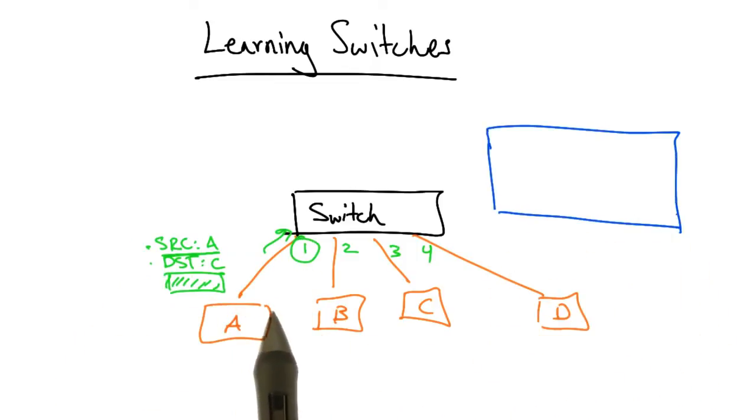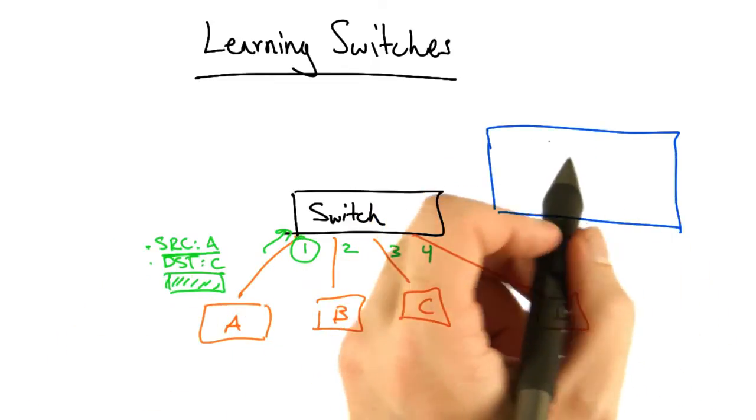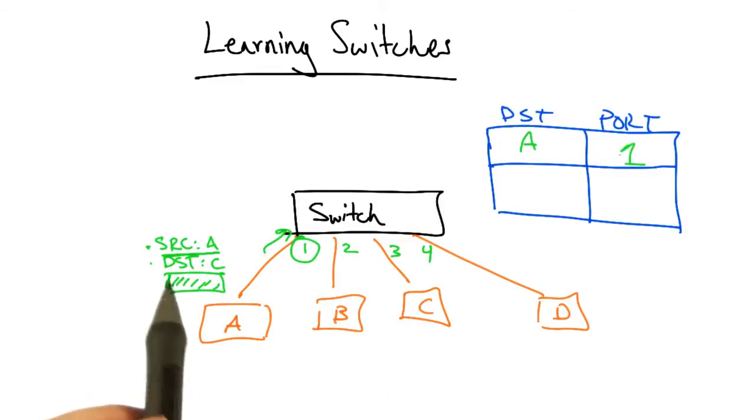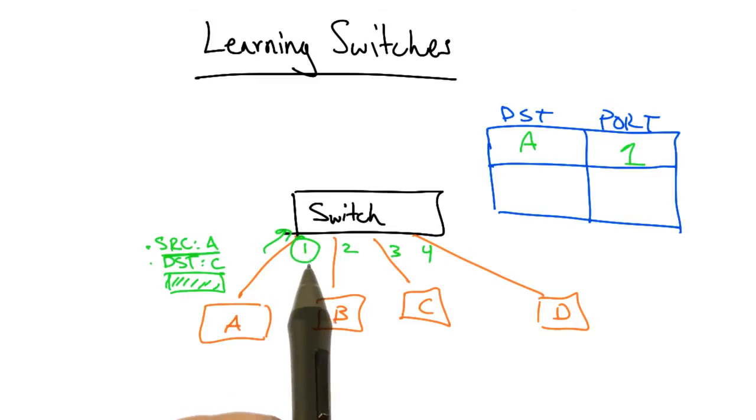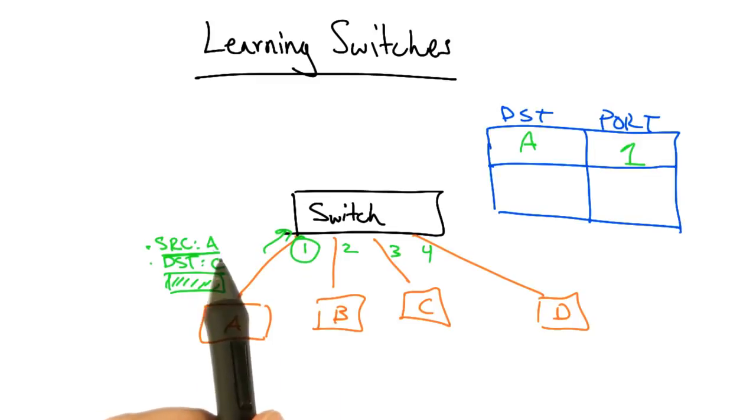This piece of information allows the switch to begin populating its forwarding table. Because it sees a packet that originated from A coming in on port 1, it knows that future frames destined for A can be sent out port 1.